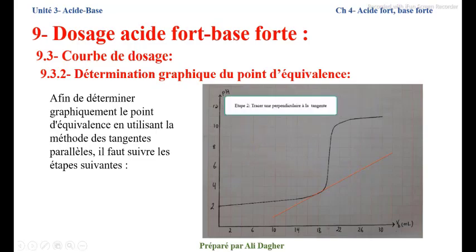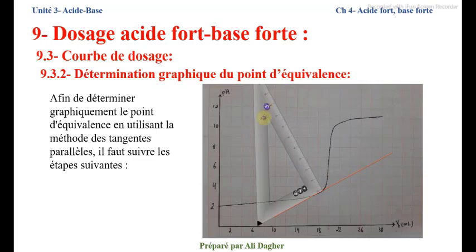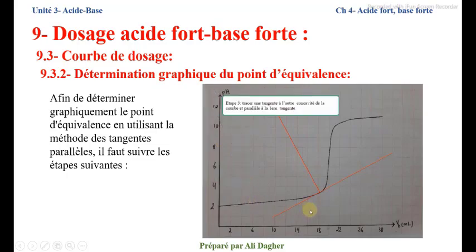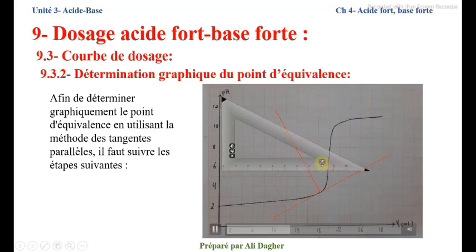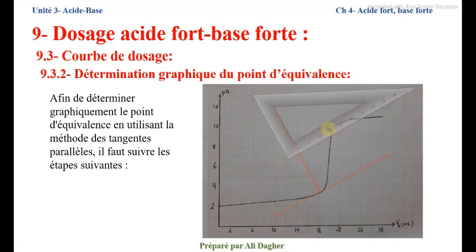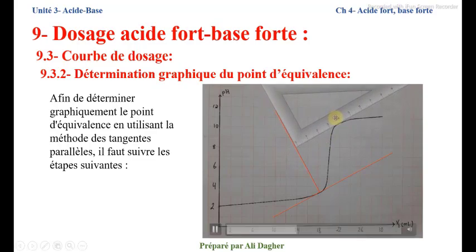Étape 2 : on trace une perpendiculaire à cette tangente. Étape 3 : tracer une tangente à l'autre concavité de la courbe, parallèle à la première tangente. Cette tangente doit être parallèle à la première tangente et perpendiculaire à la perpendiculaire tracée.